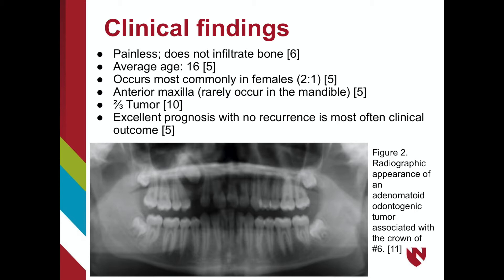AOTs are known as the 2-thirds tumor. This is because 2-thirds of cases are seen in the maxilla, 2-thirds of cases are in young females, 2-thirds of cases are associated with an unerupted tooth, and 2-thirds of the cases are associated with canines.